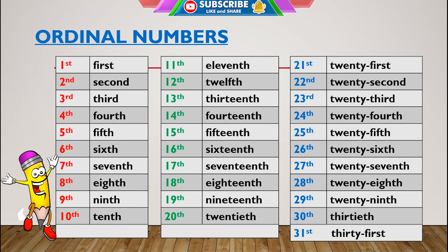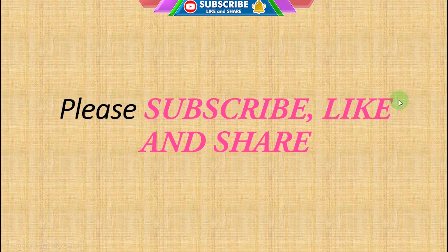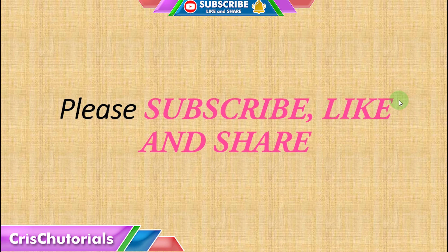Remember, ordinal numbers normally show the order or sequence of something, while cardinal numbers say how many of something — they are counting numbers. Please do not forget to subscribe, like, and share this video. Thank you, I'll see you next time.